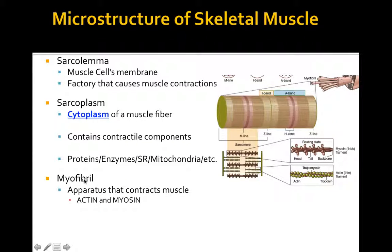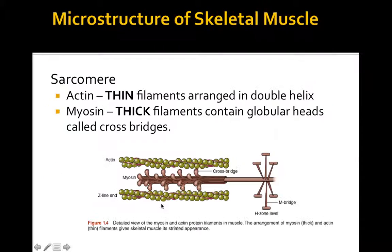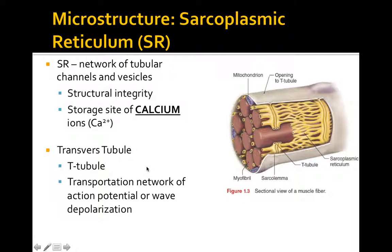The basic makeup of the myofibril is actin and myosin—these are the components that cause muscle contraction. The sarcomere is composed of actin, which are thin filaments arranged in a double helix, and myosin, which are thick filaments containing globular heads called cross bridges. The myosin cross bridges bind on and pull the actin toward the M-line, then release to elongate the muscle again.